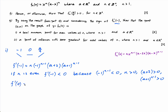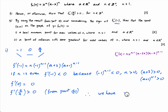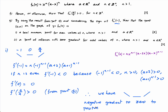So we have: f'(-1) < 0, f'(0) = 0, and f'(a/4) > 0. Therefore the gradient goes negative → zero → positive, which gives a local minimum at (0,0) for even values of n. That's part one done.